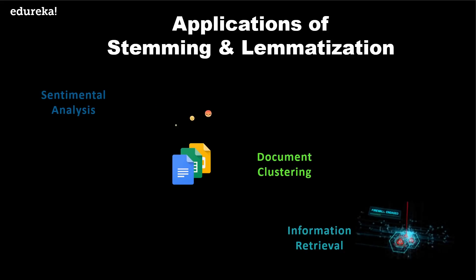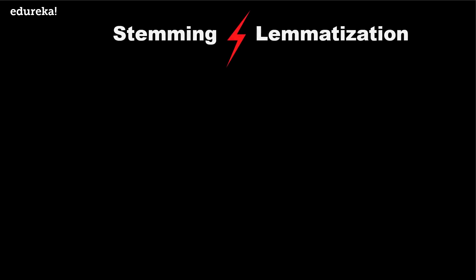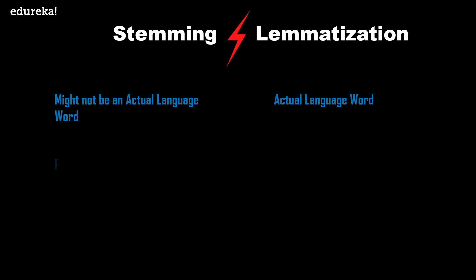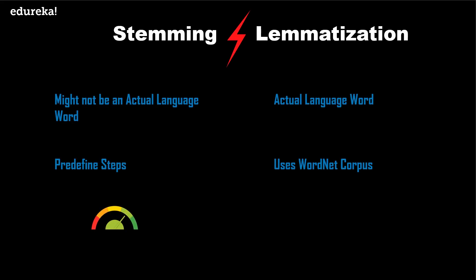When should you use stemming and when should you use lemmatization? Both generate the root form of inflected words, but a stem might not be an actual word whereas a lemma is an actual language word. Stemming follows an algorithm with steps performed on words, making it faster. Lemmatization uses the WordNet corpus and a stop words corpus to produce lemmas, making it slower. If speed is the focus, use stemming. If you are building a language application where linguistic accuracy is important, use lemmatization, as it uses a corpus to match root forms.